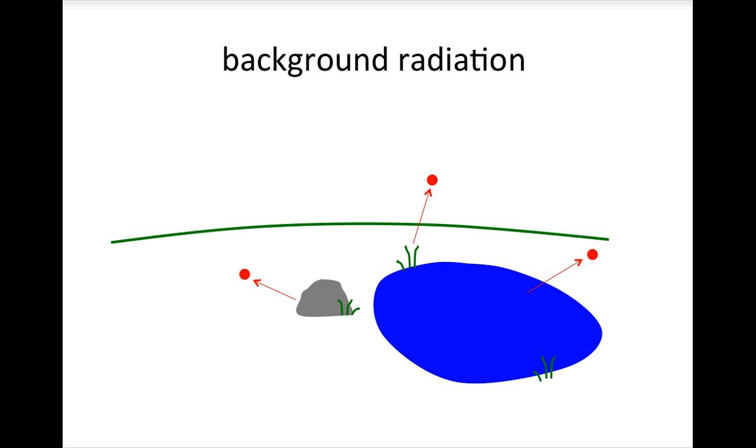There are alpha and beta decays occurring. The most common source of background radiation is a gas released from the ground called radon.